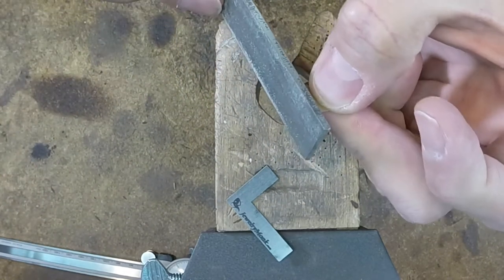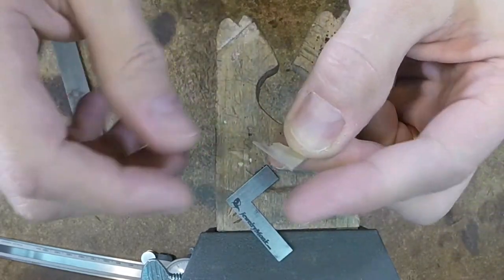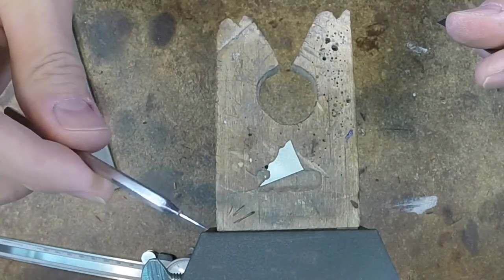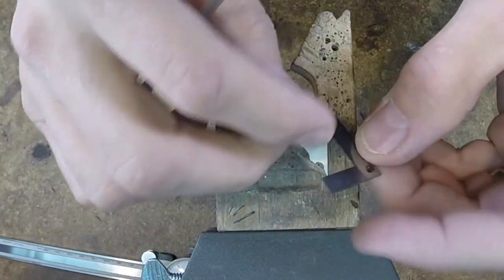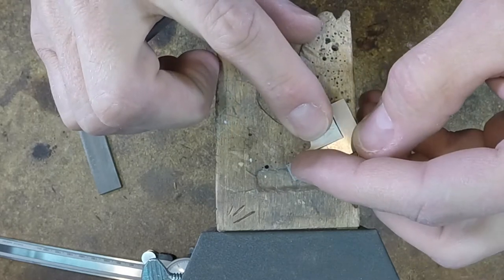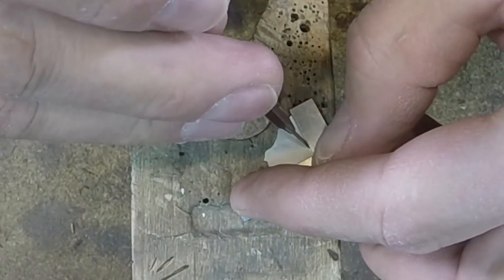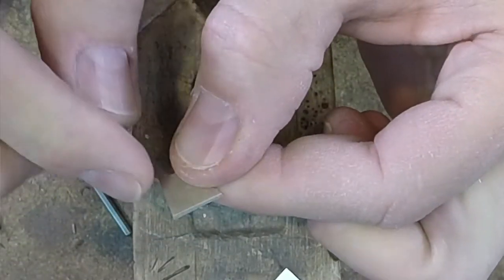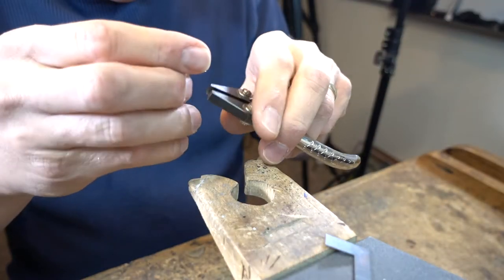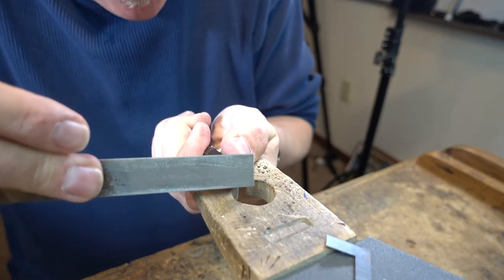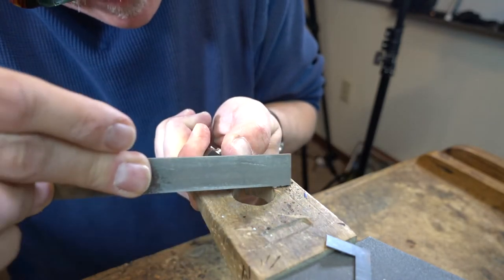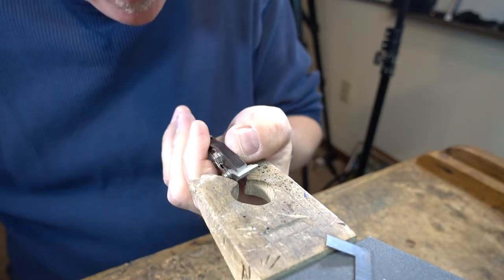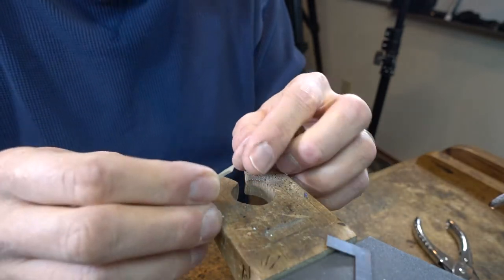First I want to make sure that I've got a flat edge, which on this one is already flat. Then I'll take my square and a scribe, which is just a probe that's sharpened, and I'll lay my square out so that one edge is on the flat, and then I'll scribe a line so that now I know that line is exactly 90 degrees from this edge. Then I'll just file or cut up to that line. So now I know that I've got two square edges.